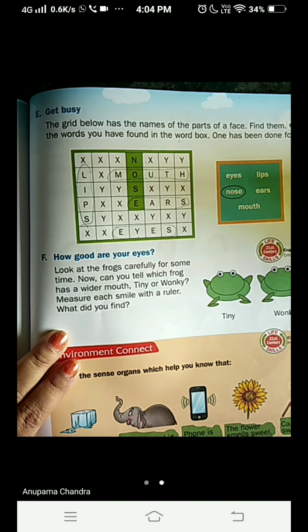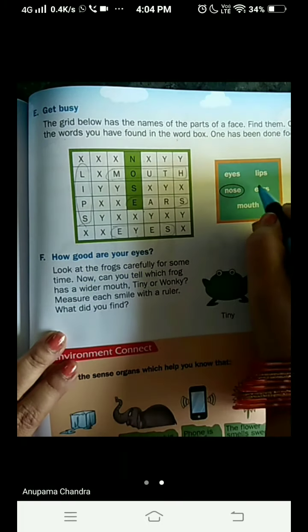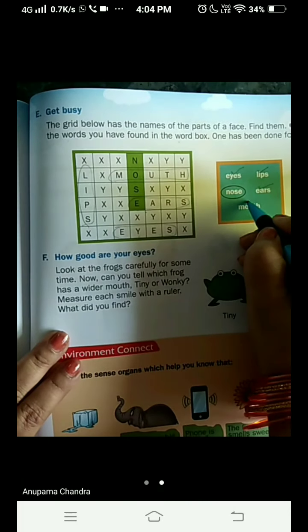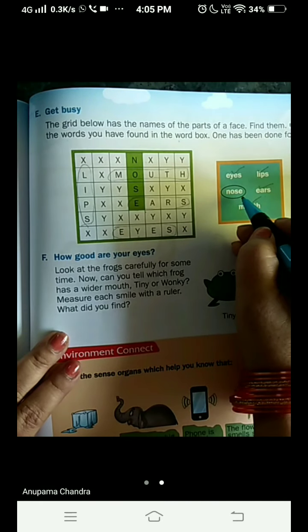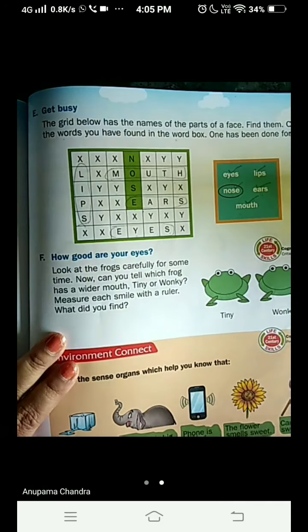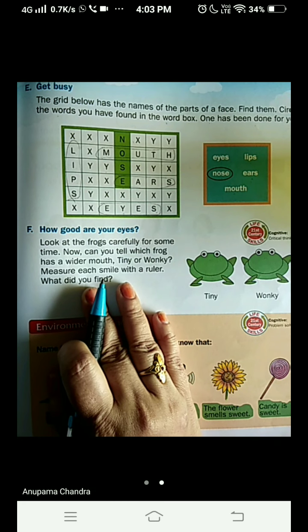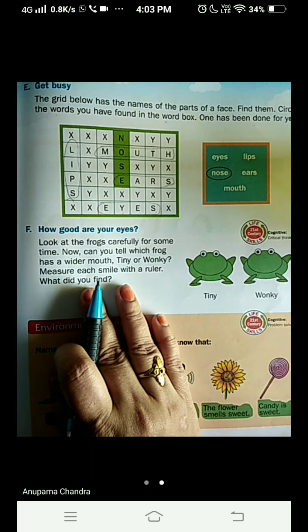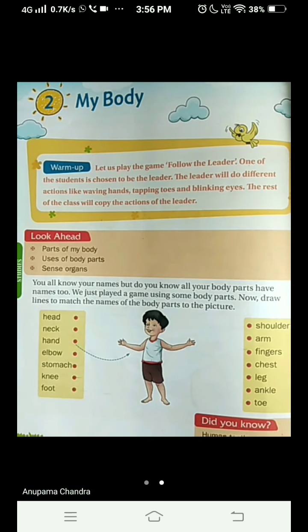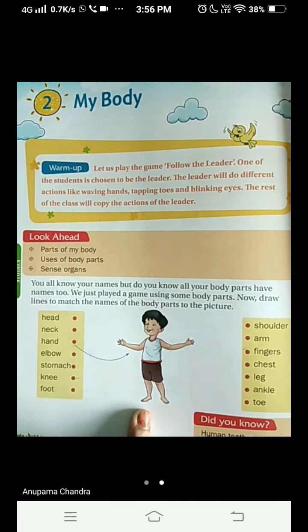Let's check it out whether we have completed all of them or not. We have done ears, eyes, lips, mouth, and nose is already done for you. So yes, we have completed all of them. It was so easy right? And we also enjoyed it, very nice. Now let's go to another page children. We are on page number 172. We are going to match the body parts with the picture given. So be ready with your scale.